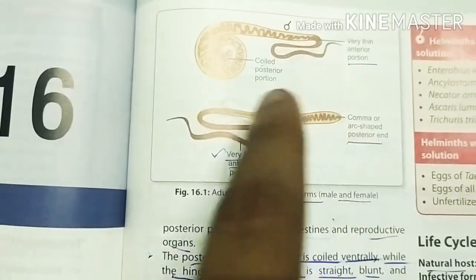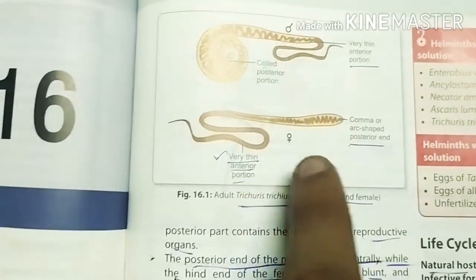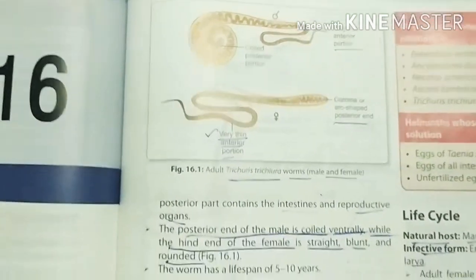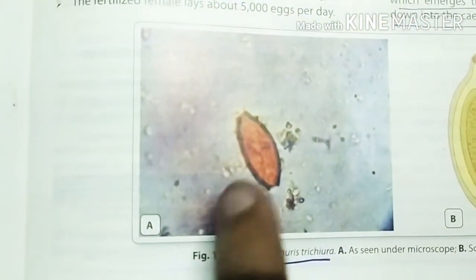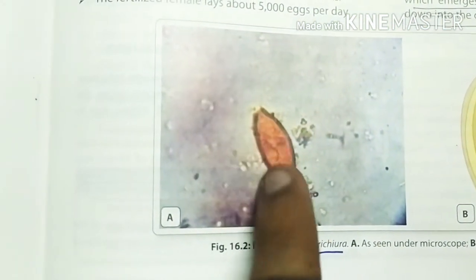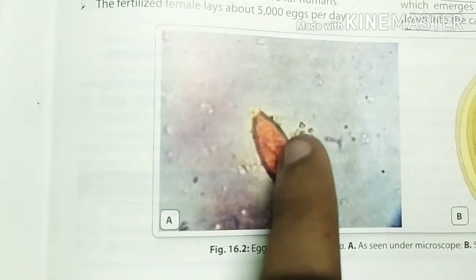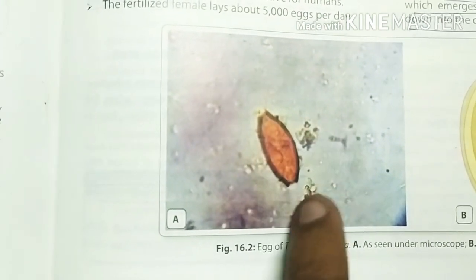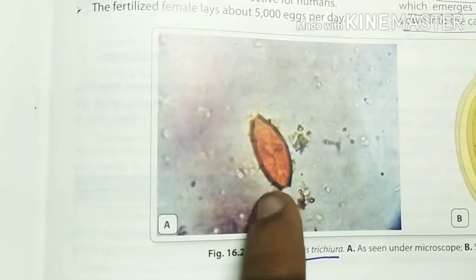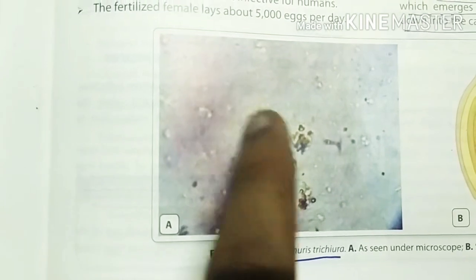So it is called whipworm. This is a female one, this is a male one. Now you see the egg — you see brown coloration. Why the brown color? Because it is bile stained. Remember this: bile stained.